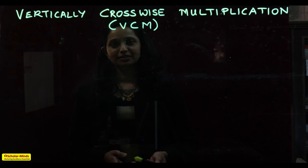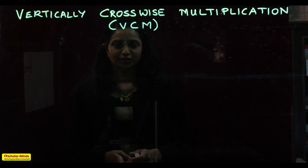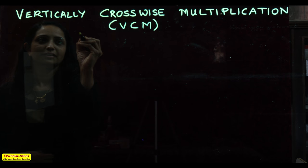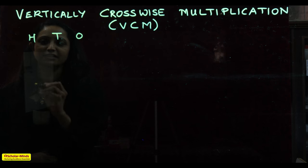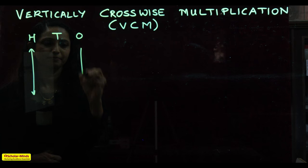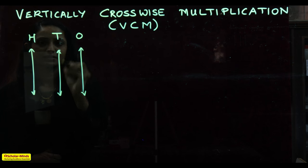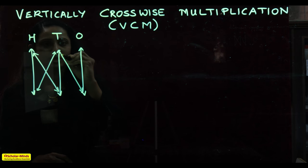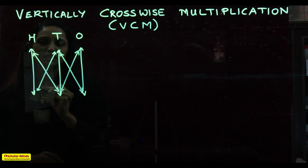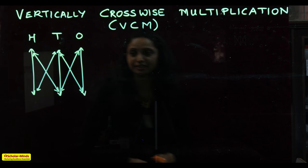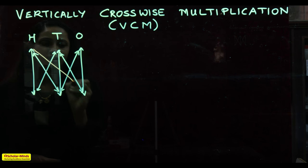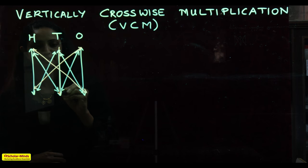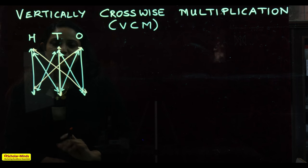Hello everyone. We continue with this lecture on the Vertically Crosswise Multiplication method. Today we concentrate on multiplying 3 digits by another 3 digits. The structure involves the ones, tens, and hundreds place. You vertically multiply these, cross multiply the ones with the tens, the tens with the hundreds, and additionally multiply the hundreds place with the ones place, then sum each. We have 6 steps in total.